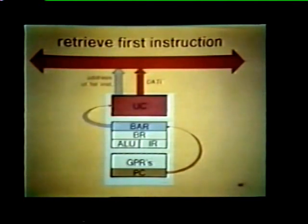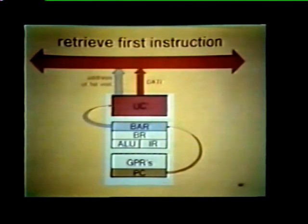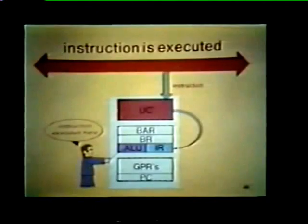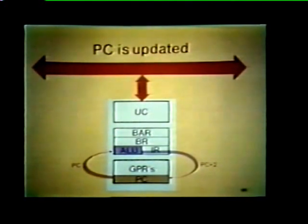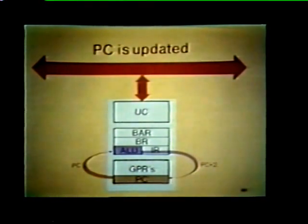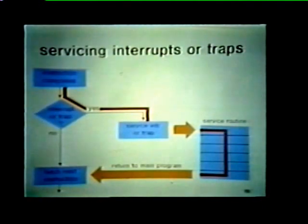The processor executes the error handling routine just like any other program. The starting address is taken from the program counter and stored in the BAR. The UC then places this address on the bus and performs a data I transfer to retrieve the first instruction. The unibus control transfers the instruction to the IR, where it is decoded and executed by the ALU. Meanwhile, the ALU updates the PC by two to point to the next instruction word. This process repeats for each instruction in the routine until all instructions are executed and the processor returns to its main program.